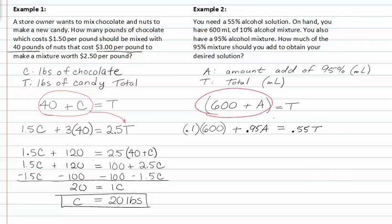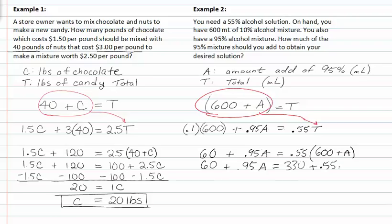We know that this is equal to T, so we can substitute it in for T here. When we do that, we get 60 plus .95A is equal to .55 times 600 plus A. Now if we distribute, we get 330 plus .55A.